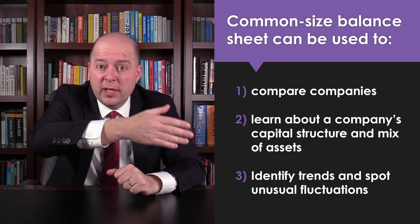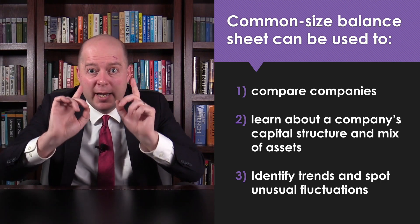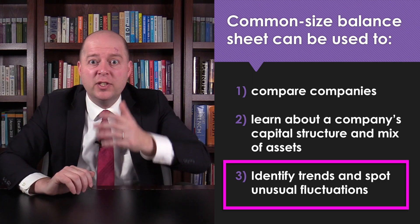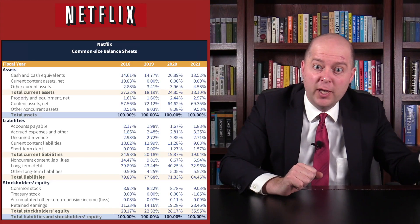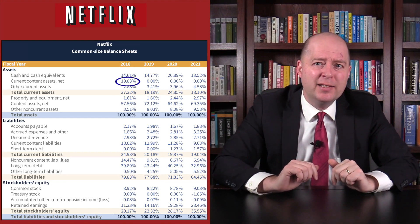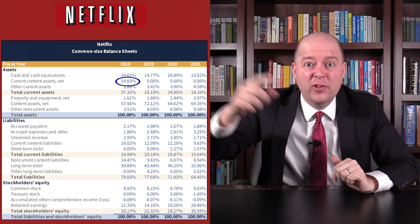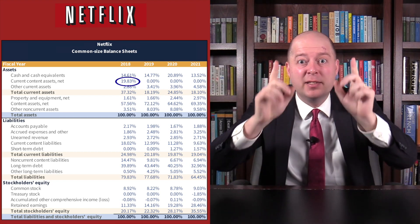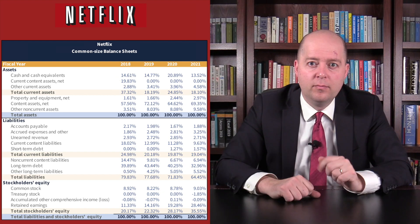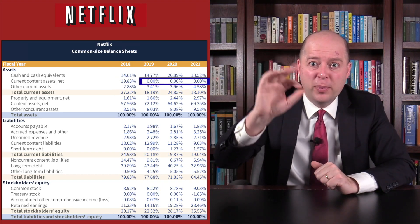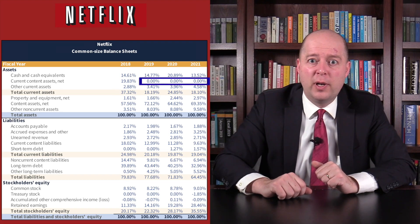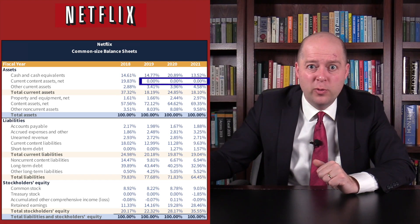But there's even more you can do with common-sized balance sheets. If we look at a series of them over time, we can identify trends and spot unusual fluctuations. Turning to Netflix, we see that current content assets accounted for nearly 20% of Netflix's total assets at the end of 2018. Yet current content assets accounted for 0% of Netflix's total assets from 2019 to 2021.